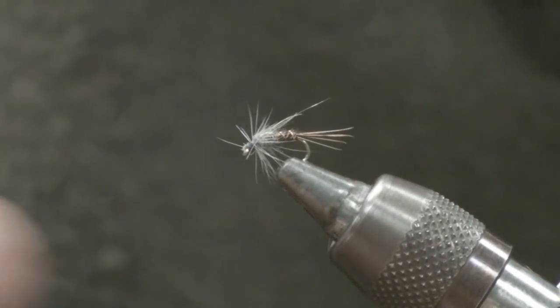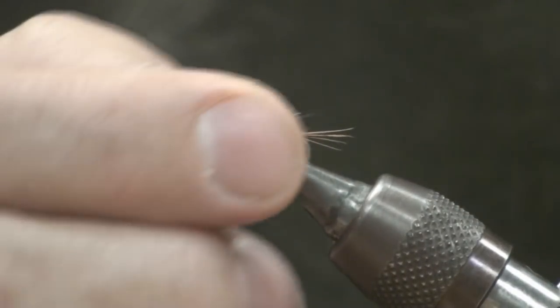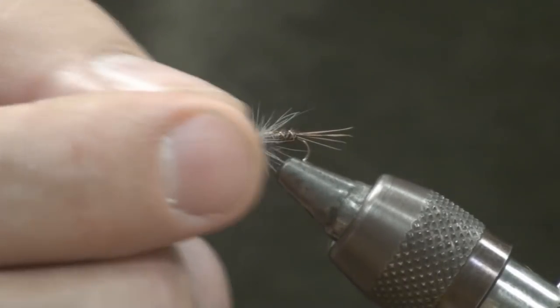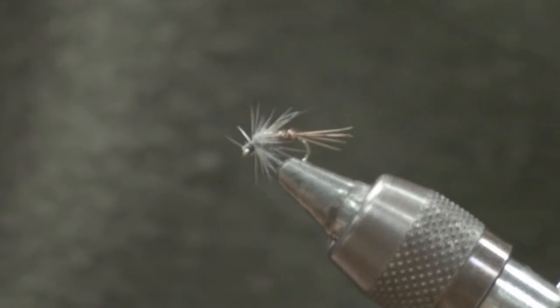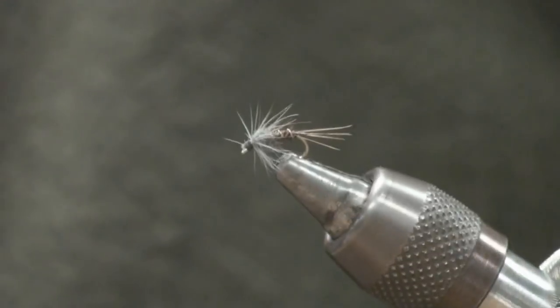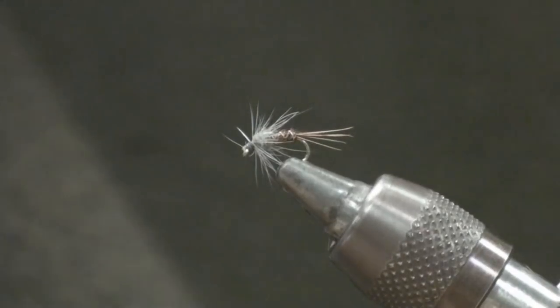I think what happens when this hackle gets wet, it almost forms an air bubble between the thorax and the hackle. So if you can take a look and see the 360 degree view of that. And that's a real good imitation for a baetis emerger.